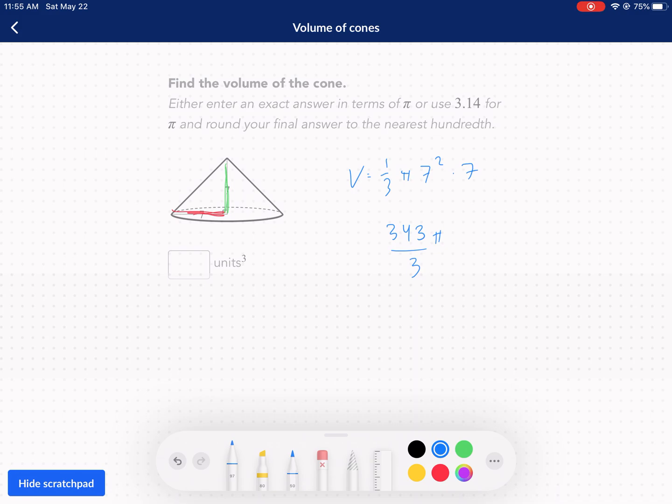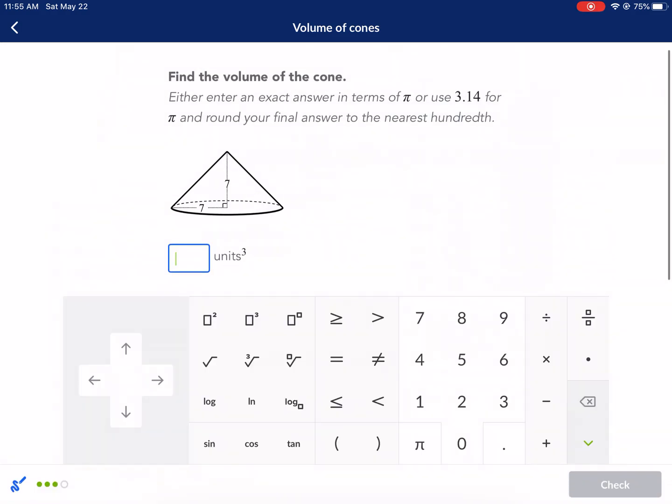And I don't think that's divisible by 3. Because the sum of the digits of 343 are not divisible by 3. It's 10. 10 is not divisible by 3. So we just got to leave it like that. 343 pi divided by 3. Check it.